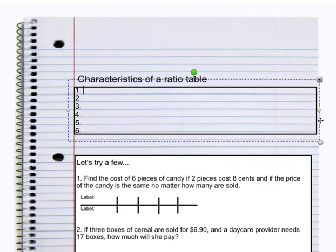The first characteristic of a ratio table is that there are two or more rows and two or more columns. What this tells us is that we need at least two items to compare in order to have a ratio.